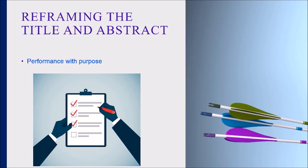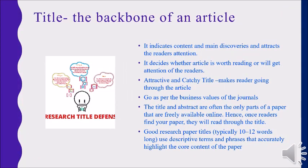We will start discussion from the first agenda. The research project title may differ from the research article title. Your title is your first opportunity to draw in readers, so you must ensure that it makes an impact. Compared to the work you put into the full paper, the title may feel like an afterthought, but creating a good title is essential to maximizing the reach of your article. The title is the USP of your research work — it indicates content and main discoveries, attracts the reader's attention, and decides whether the article is worth reading. Good research paper titles use descriptive terms and phrases that accurately highlight the core content of the paper.